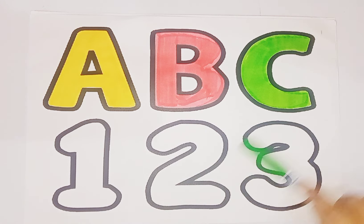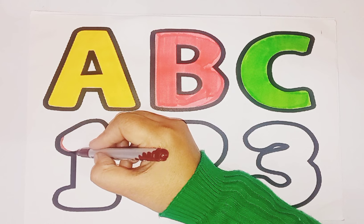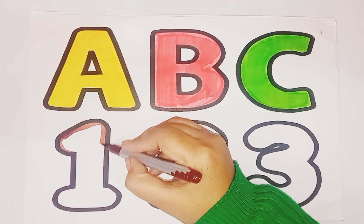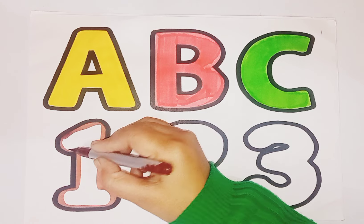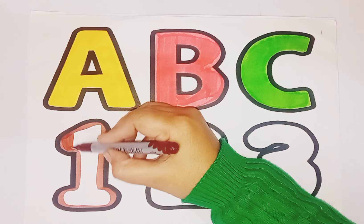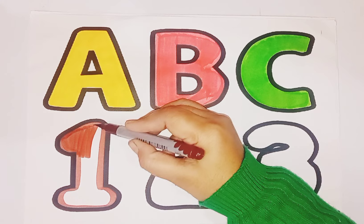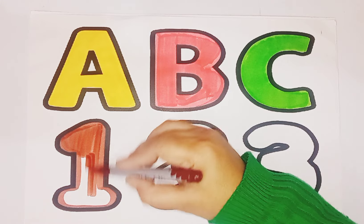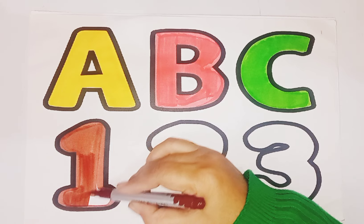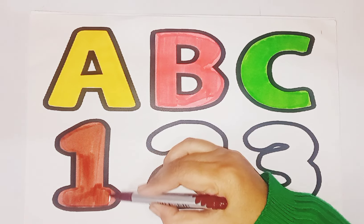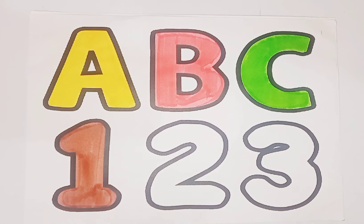Now we learn number 1, 2, and 3. Brown color 1. And spelling is O-N-E-1. This is number 1.